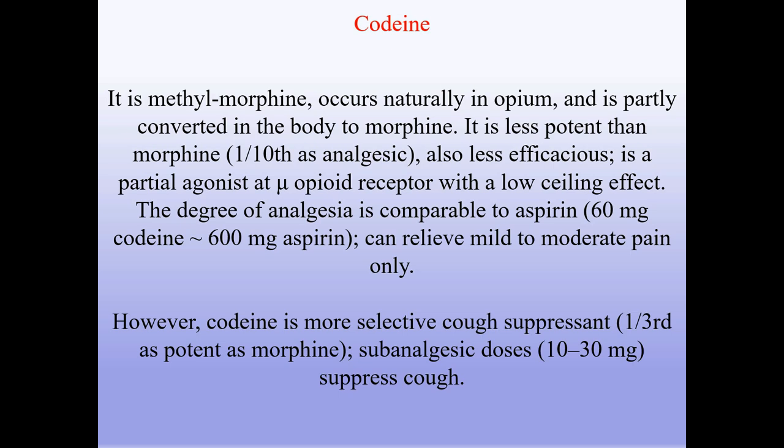Codeine is methylmorphine, occurs naturally in opium, and is partly converted in the body to morphine. It is less potent than morphine — one-tenth as analgesic — and also less efficacious. It is a partial agonist at the mu opioid receptor with a low ceiling effect. The degree of analgesia is comparable to aspirin: 60 mg codeine is approximately equivalent to 600 mg aspirin. It can relieve mild to moderate pain only. However, codeine is a more selective cough suppressant — one-third as potent as morphine; sub-analgesic doses of 10–30 mg suppress cough.